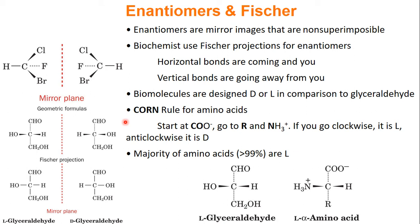For chiral compounds, biochemists give a designation of D or L. In organic chemistry you may have heard of R and S, but biochemists use D or L instead. It has to do with comparing the stereochemistry of glyceraldehyde to whatever you're interested in. For amino acids, there is a trick called the corn rule: put the amino acid in a Fischer projection starting with COO minus at the top, and if you can spell C-O-R-N going clockwise, it's an L amino acid. If you have to spell corn going counterclockwise, it's a D amino acid. Over 99.9% of amino acids on Earth are L amino acids.